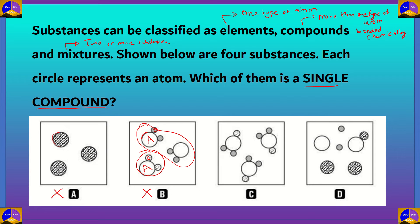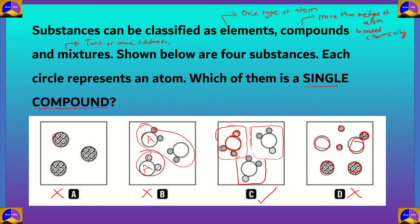Option D shows atoms randomly scattered — for example, different atoms and compounds scattered throughout — so this is most definitely a mixture and cannot be defined as a single compound. Option D is also incorrect. The correct option is C. In option C, each chemically bonded unit consists of one large circle, two small gray circles, and one gradient circle, and this composition is the same for all units in the container. So option C is a single compound and is the correct answer.